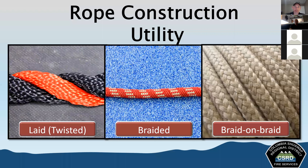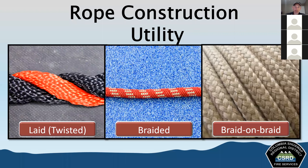Braided rope is constructed using uniformly intertwining strands in a diagonal overlapping pattern. It's less likely to twist during use than laid rope. Load-bearing fibers are still vulnerable to direct abrasion and damage. Most are synthetic but some can be natural fiber. Braid-on-braid is constructed of a braided core enclosed in a braided herringbone pattern sheath, also known as double braid. It's very strong — half the strength in the sheath, half in the core. A disadvantage is it does not resist abrasion as well as kernmantle, and the sheath may slide along the core.